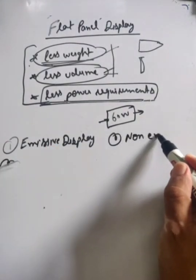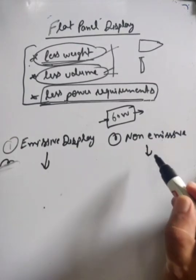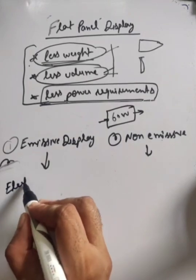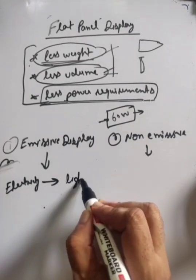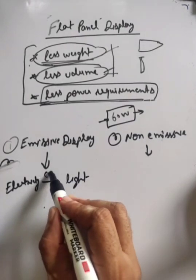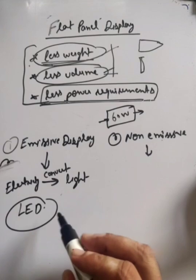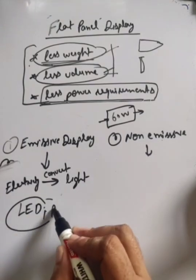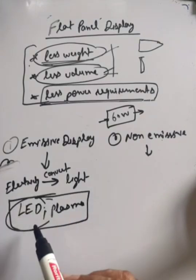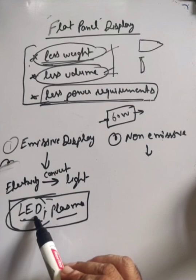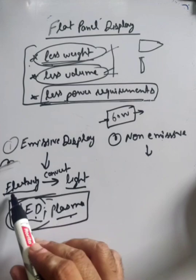The emissive display - what is this? Electricity is converted to light. Electricity is converted to lights. For example, LED TV and plasma. LED and plasma - light emitting diode and plasma TV. Electricity is converted to lights.